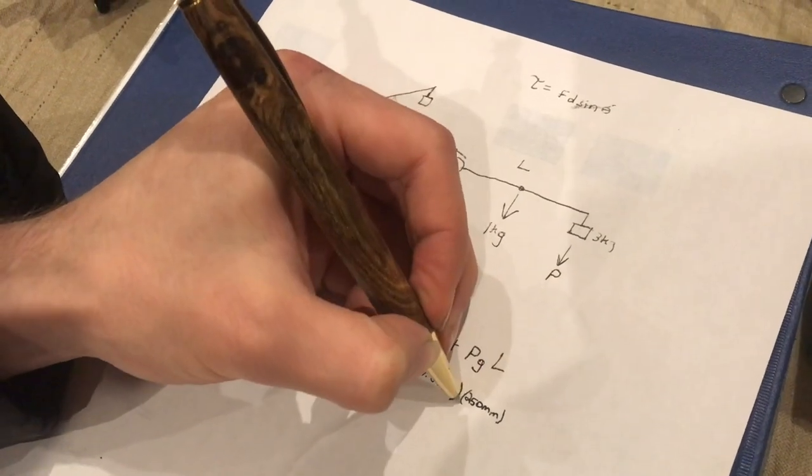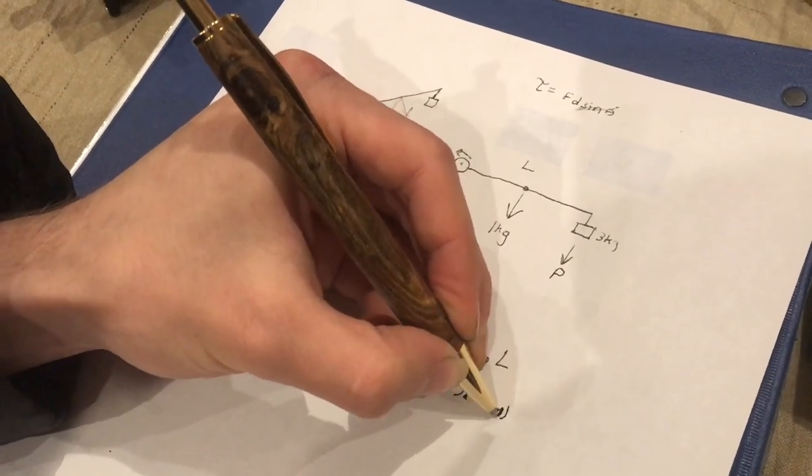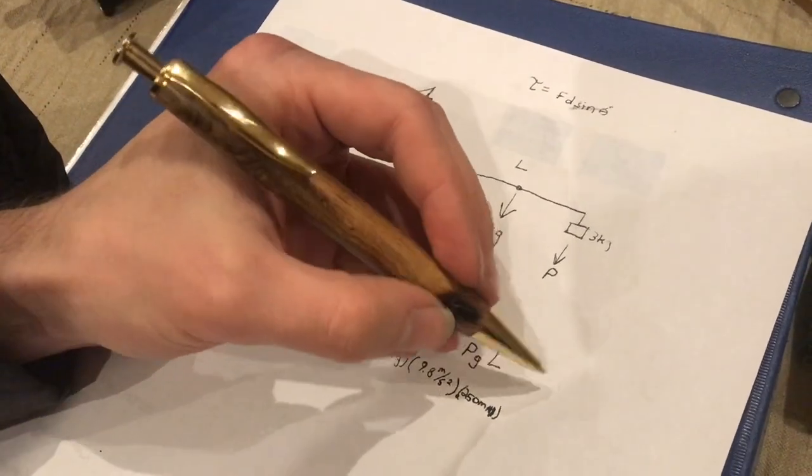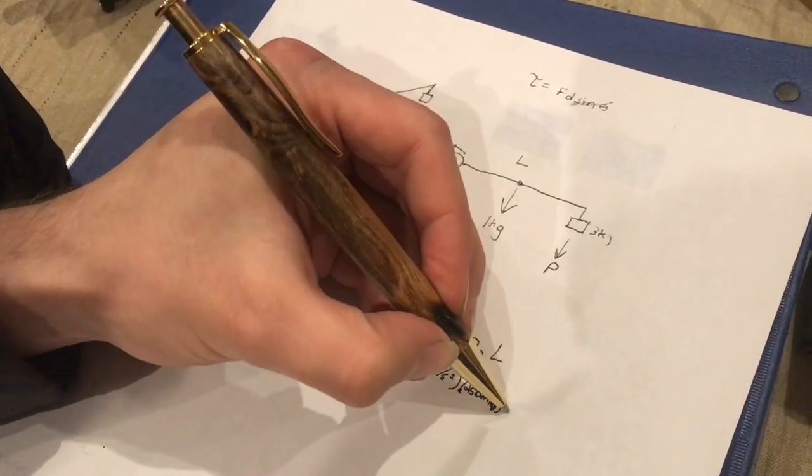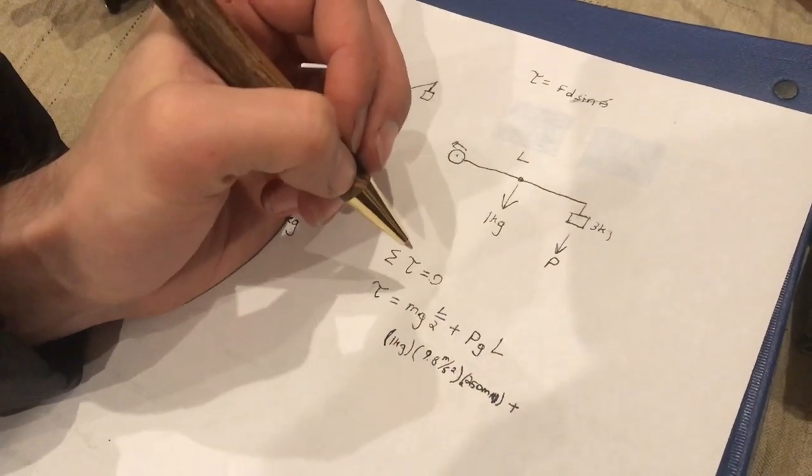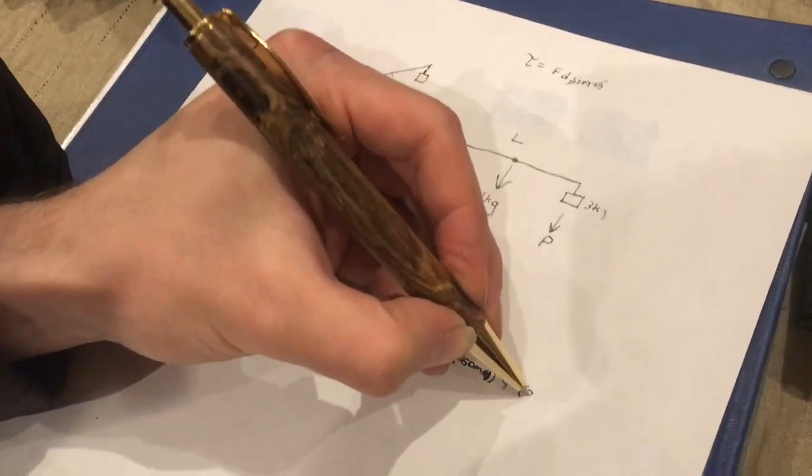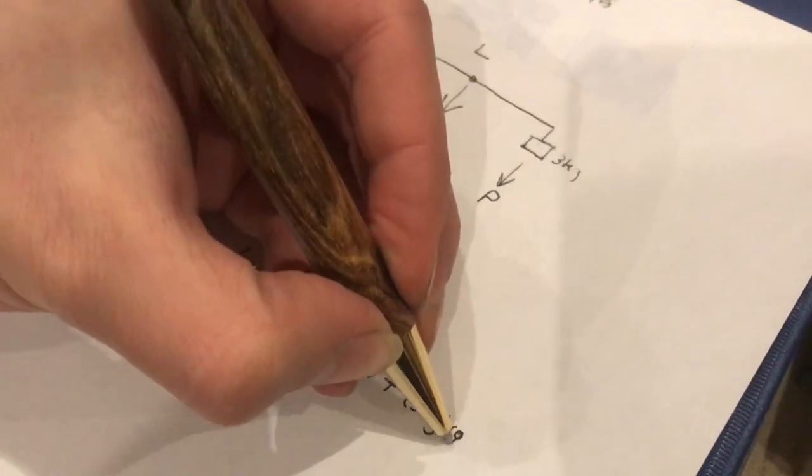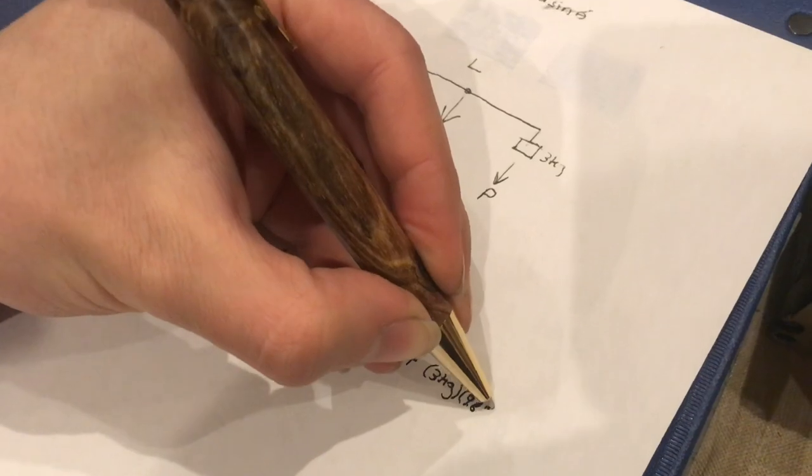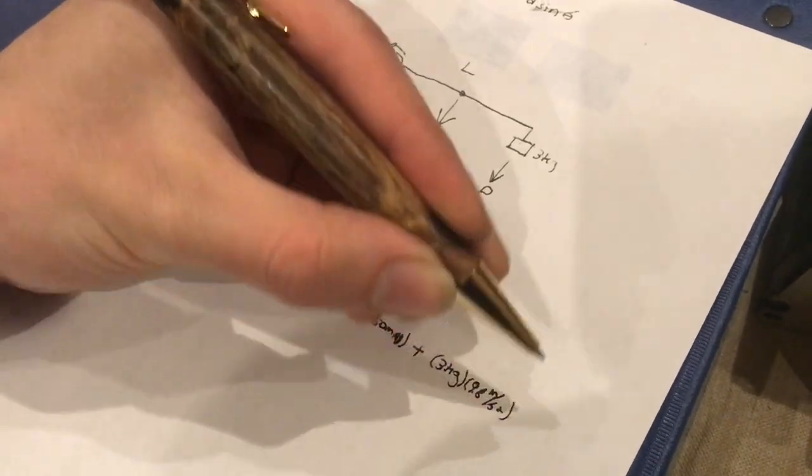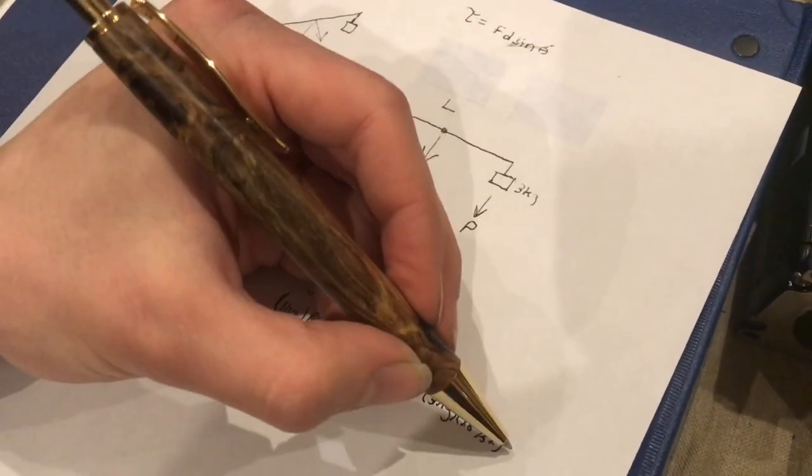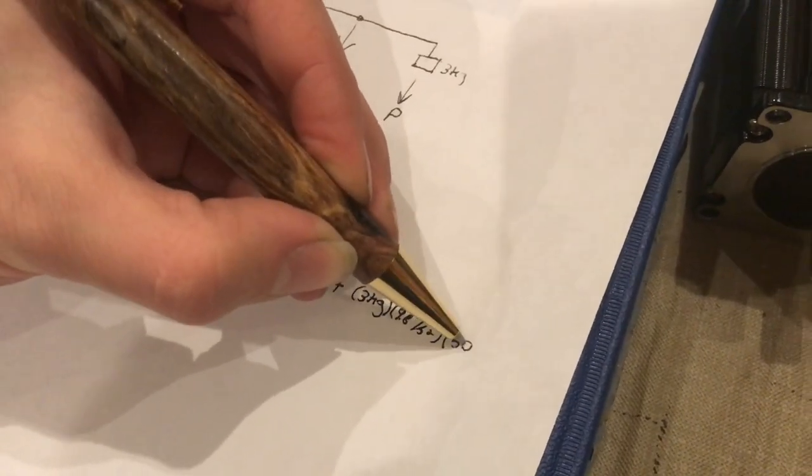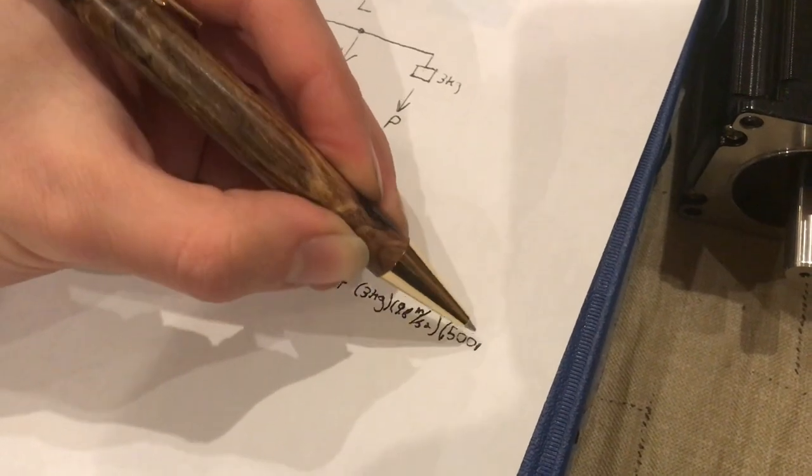See how easy that is to do that, you couldn't do that if we left in inches. Anyway, plus 3 kilograms times that 9.8 meters per second squared times full L, 0.5 meters.